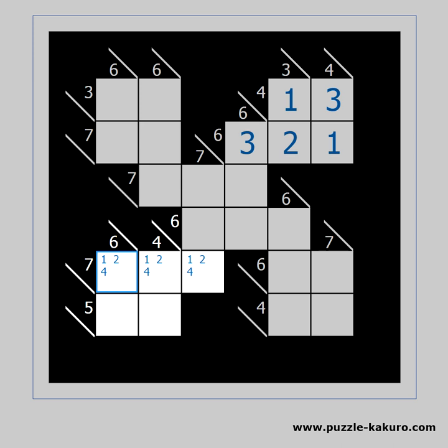All the candidates are valid. The 4 vertically can be solved only as 1 and 3, so the 2 and the 4 are not valid candidates. We can place 1 in that cell and remove 1 as a candidate from the rest of the block.